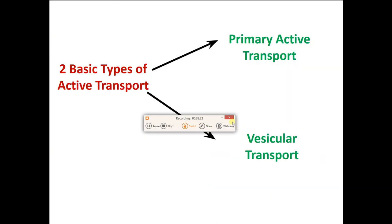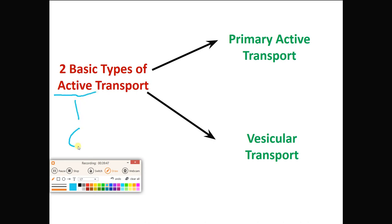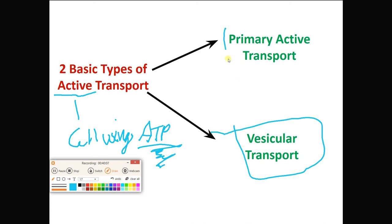We're done with passive transport. Now for active transport. Remember: active transport means the cell is using ATP. We're going to discuss two types — primary active transport and vesicular transport — where the cell is utilizing ATP.